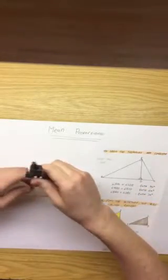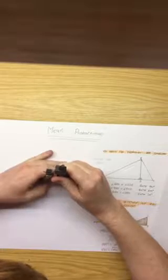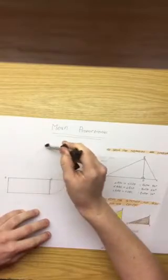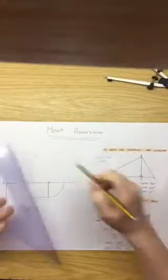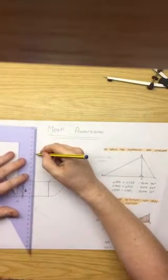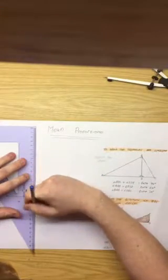We then bisect the line, putting our compass here and setting a length greater than halfway. We scribe one arc here and one arc here. Then putting our compass on A, we scribe an arc here and an arc here. Where these two points intersect, we join them, and where they cross gives us the midpoint of our line.